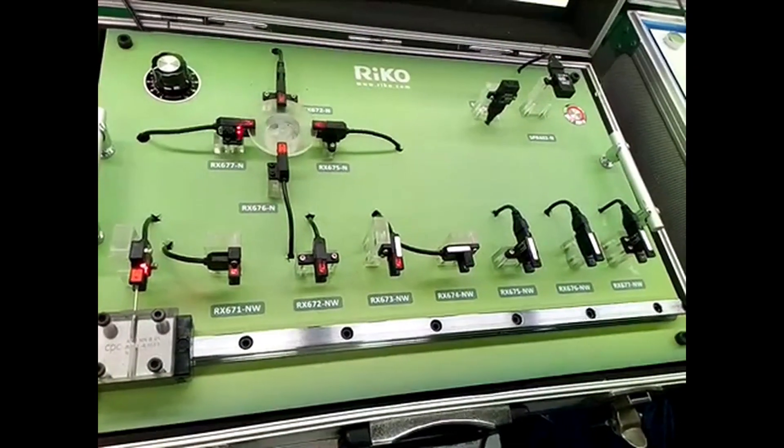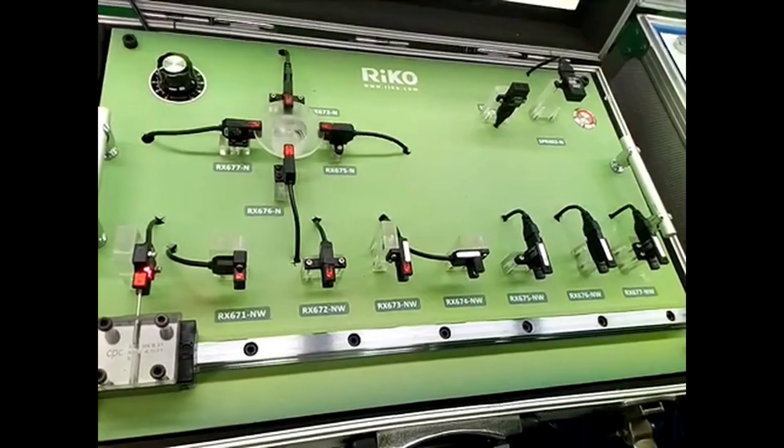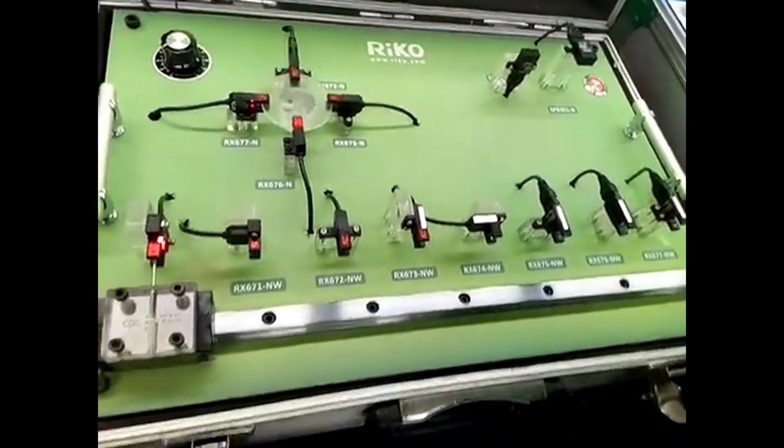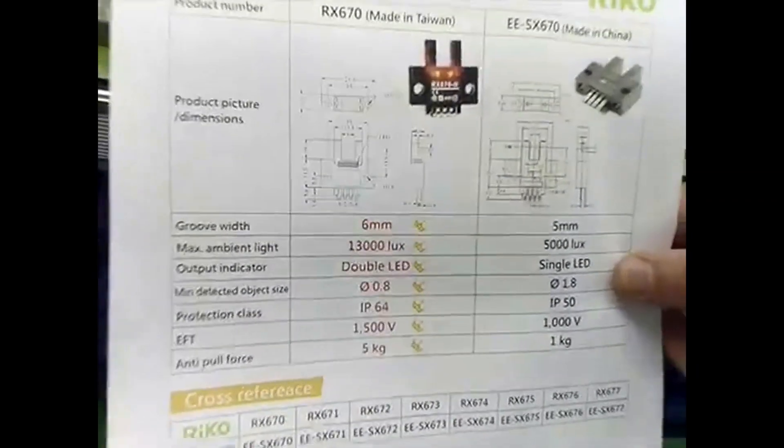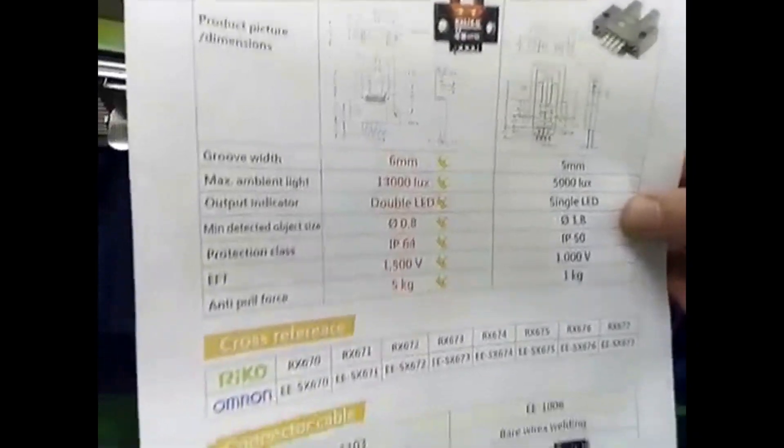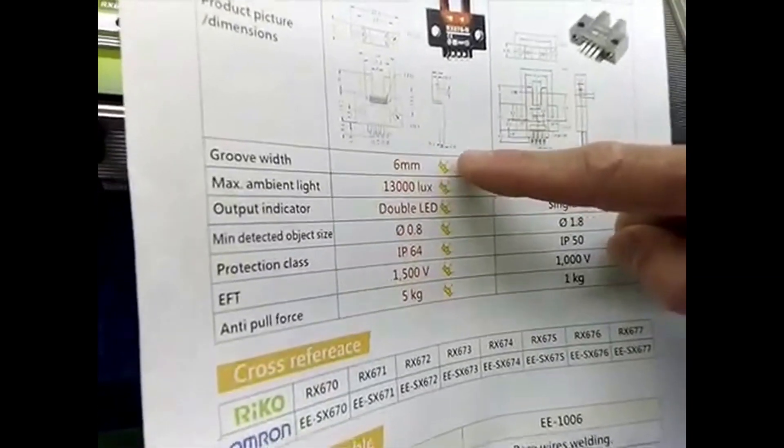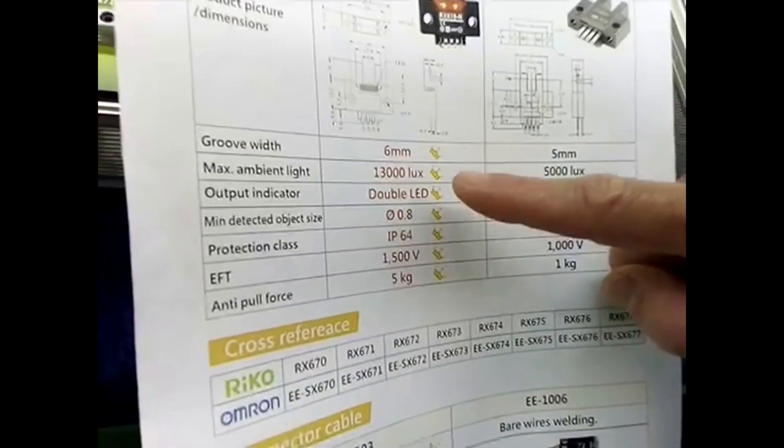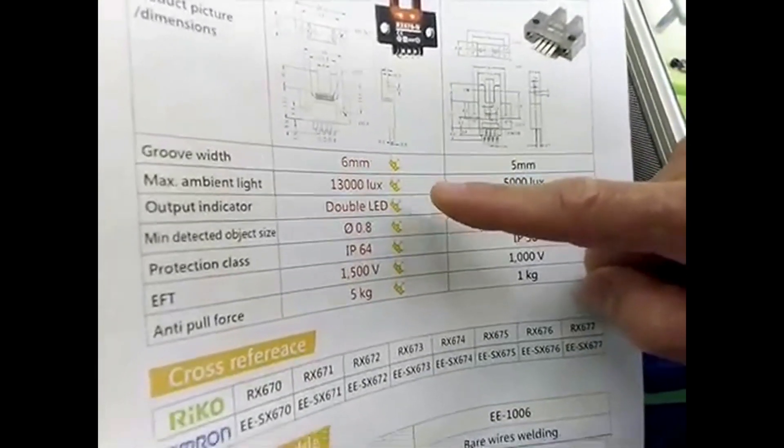It's Ricoh Micro U-shaped photo sensor. In comparison with competitor motors, Ricoh design distance 6mm and ambient light 30,000 lux.